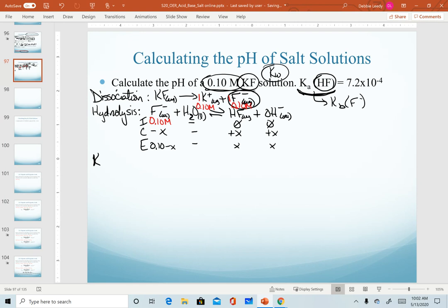My next step then is to write my equilibrium expression and equation. Since I'm producing hydroxide in solution, I need to work with a Kb expression. We write our expression first, and then plug in our equilibrium values to get this equation. Now realize I can't use my 7.2 times 10 to the minus 4 that's given because that's a Ka value. So it means I need to do an extra step to convert my Ka into a Kb.